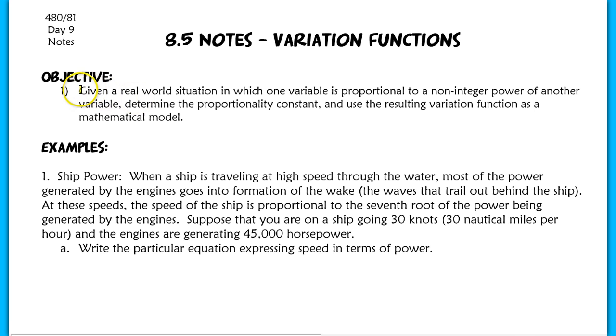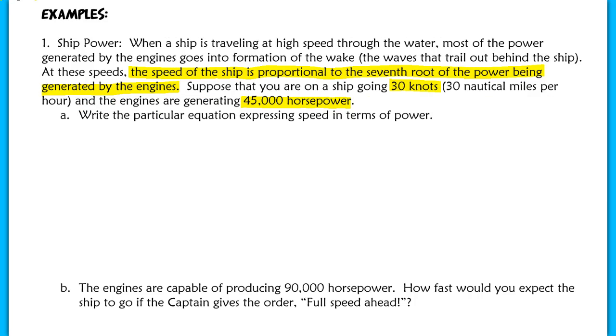Our objective for today is to be given a real-world situation where one variable is proportional to a non-integer power of another variable. After that, we determine the proportionality constant, which is that k value I was talking about, and then we'll use the resulting variation function as a mathematical model to answer other questions. It doesn't matter if you choose to use x and y for your independent and dependent variables, but I'm going to use letters to actually represent speed and power as opposed to x and y. So I'm going to let s equal the speed of the ship and p is equal to the horsepower of your engines.